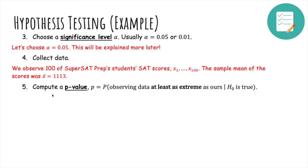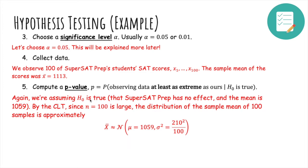Now we compute a p-value, which is the probability of observing data at least as extreme as ours, given that H₀ is true. So again, since H₀ is true, we're going to assume that the mean is 1059. So by the central limit theorem, since N = 100 is large enough, the distribution of the sample mean of 100 samples is approximately normal with mean 1059 and variance 210² over 100. So the variance of a single test taker was 210². And so you know the variance of the sample mean is σ² over N. And we showed this many times.